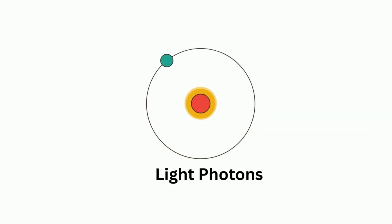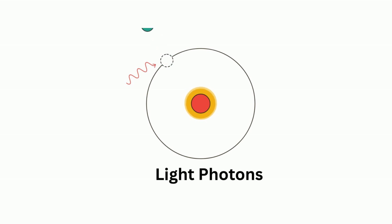Light is made up of tiny particles called photons, tiny packets of energy that behave like both particles and waves.